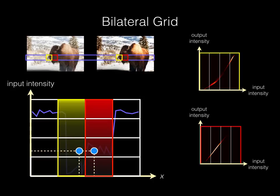The intuition is that for pixels nearby in space, if they have similar intensity, they should map to similar outputs. But if there's a big jump such as at an edge, then they can map to different outputs.